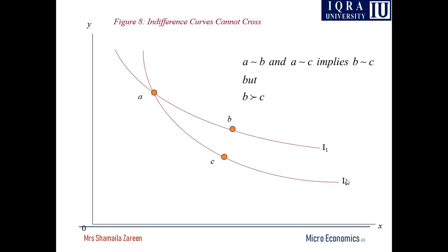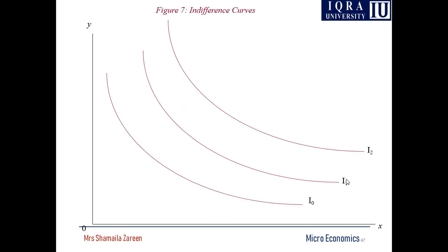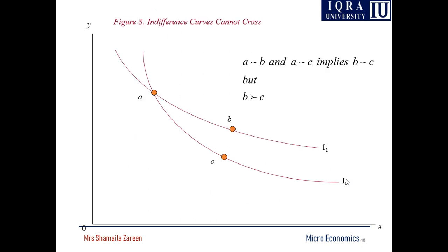The level of satisfaction cannot be measured precisely, but these levels of satisfaction can be preferred or ordered. The next property is that indifference curves cannot cross with each other.